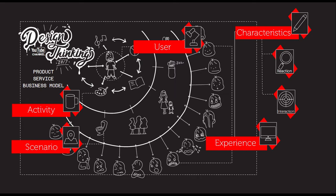We could never be a hundred percent sure that users are appropriating and developing an attachment to the product, service, or business model. That is why we have to take our time — we can see that maybe the user could be worried, maybe crying, or maybe really happy, and starts developing feelings toward the different kind of product or service that we are developing.